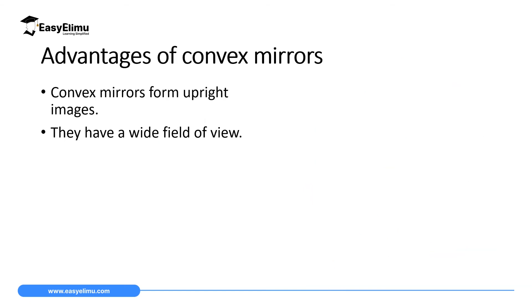We have two main advantages of convex mirrors. The first is that convex mirrors form upright images, which is an advantage compared to concave mirrors, since concave mirrors only produce inverted images except when the object is between the pole and the principal focus. The second advantage is that convex mirrors have a very wide field of view — that is, the angle at which they can focus objects to form images.